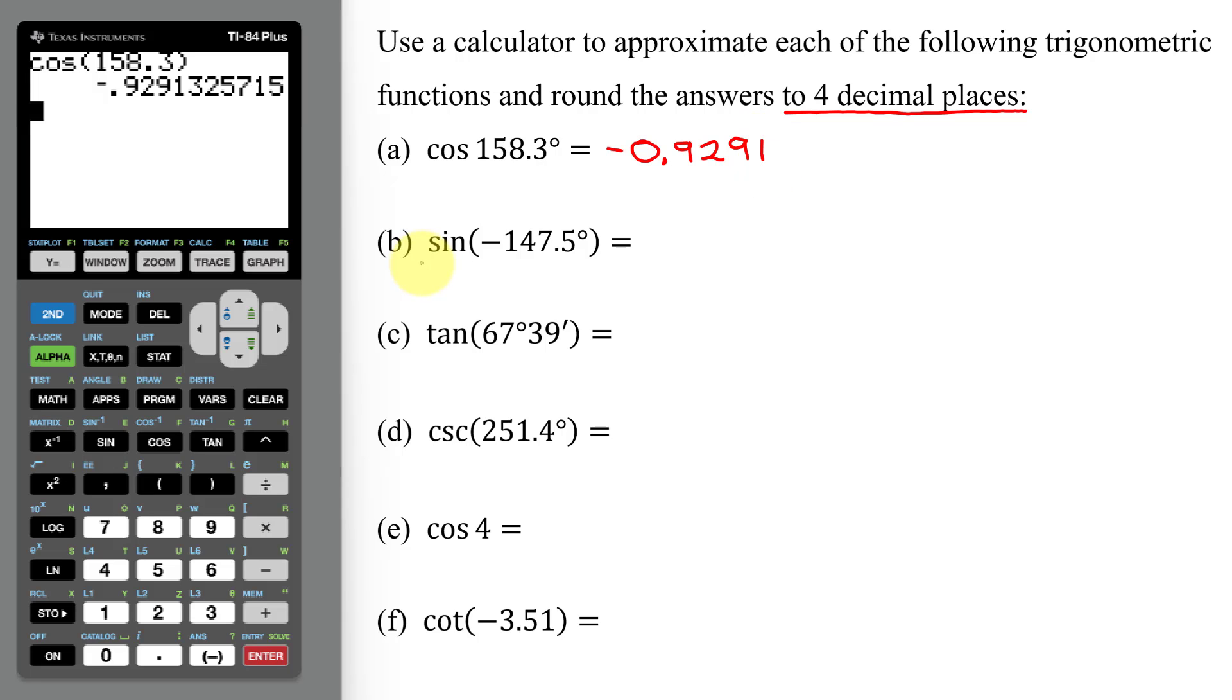Now in part B, I need to find the sine of negative 147.5 degrees. I'm still in degrees, so sine. Notice it opens parenthesis. Now be careful, this is a negative. This is the negative key on the calculator. This is the operation of subtraction.